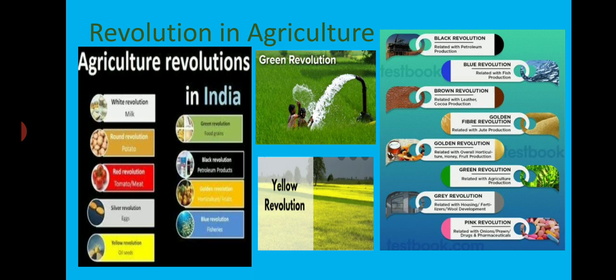Many revolutions were started to bring betterment in agriculture: the green revolution for overall food grain production, the white revolution for better quality and quantity of milk, the yellow revolution for better quality of oil seeds, the blue revolution for fisheries, the silver revolution for eggs, the red revolution for fish, tomato and meat, and the round revolution for potato.